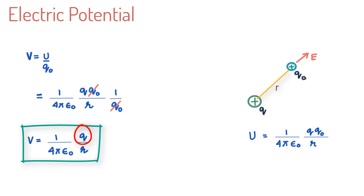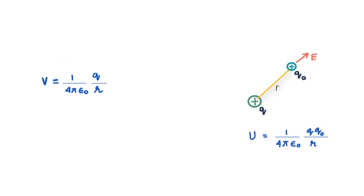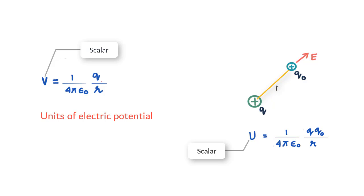Let us get into understanding this a little deeper and at the end of the lesson we will do a practice problem. So stay with me till the end. Like potential energy, potential at a point is also a scalar quantity, which is good news because it saves us the trouble of dealing with vectors and their resolution. The units of electric potential are joules per coulomb, or a volt — that is the SI unit.